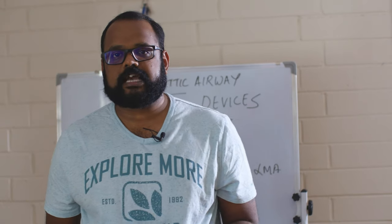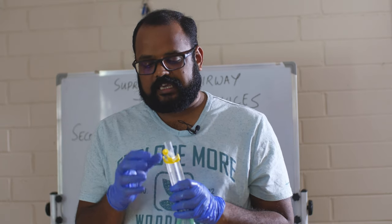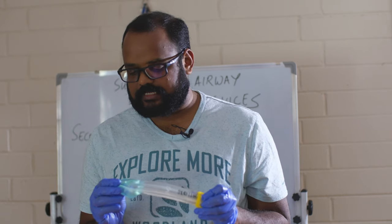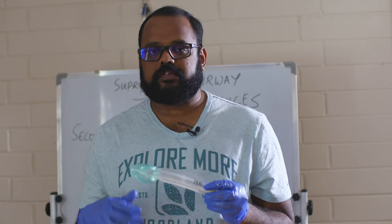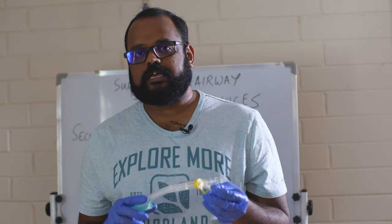Now I'll talk about the second-generation supraglottic airway device — the i-gel. The key feature is that it doesn't have an inflatable cuff. It is made of thermoplastic elastomer, essentially a gel that absorbs the patient's body temperature and molds itself to the anatomy. It is very easy to insert, and you don't need to worry about cuff pressure.